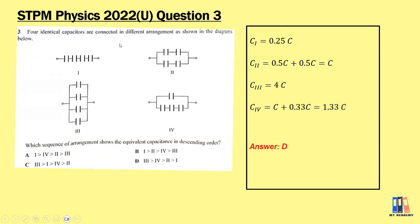First question from the 2022 Ulangan paper: four identical capacitors are connected in different arrangements. We need to find the sequence showing equivalent capacitance in descending order. The equivalent capacitances work out to C₁ = 0.25C, C₂ = C, C₃ = 4C, C₄ = 1.33C. If you have a different answer, leave it in the comments. The answer is D: arrangement 3, 4, 2, 1.